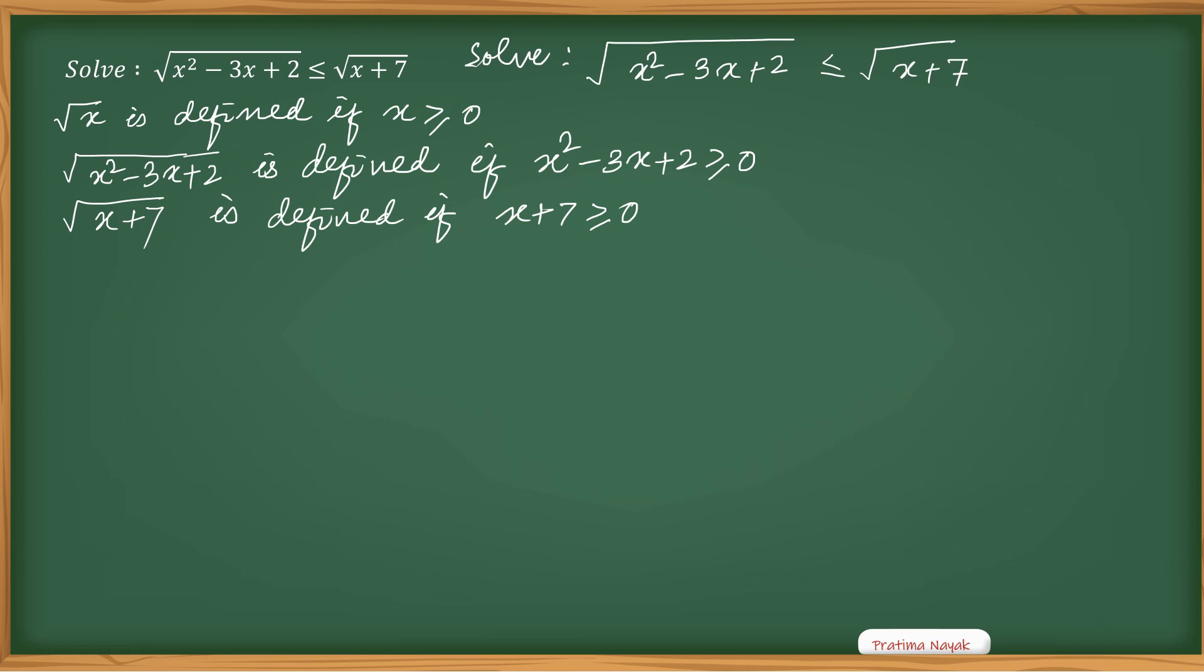So let me write all the conditions. First is x²-3x+2 is positive or equal to 0. Split the middle term - I will make it two factors: (x-1)(x-2) is positive. When product of two polynomials is positive, that means the condition is either x < 1 or x > 2.